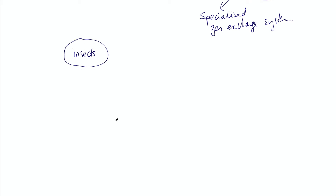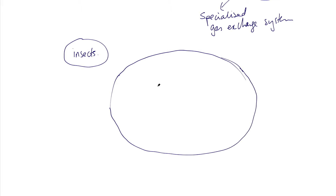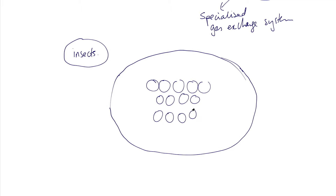We are going to look at the insect gas exchange system. If we draw the body of the insect with some respiring cells, the impact of an exchange system can be measured by how effectively you can exchange gases with all the cells, even if those cells are far away from the surface of the organism. So let's say that's the body of an insect, and the cells are way on the inside of the organism.